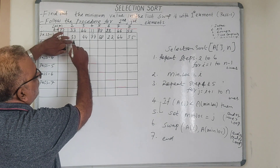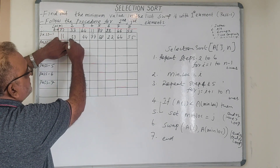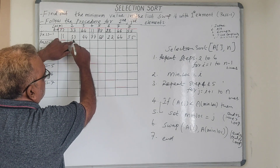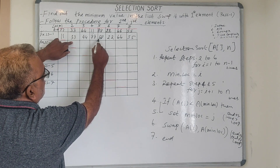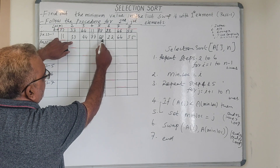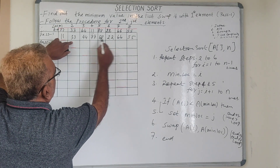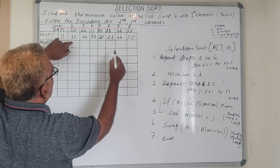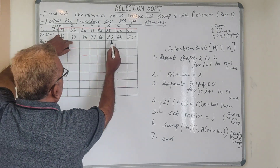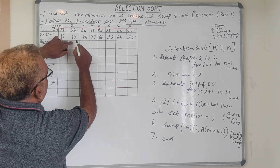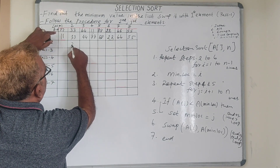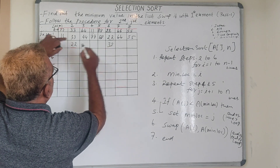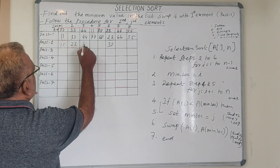Now we start searching for the minimum value from the second element: 33, 44, 77, 88, 22 — 22 is the minimum. So 22 swaps with the second element: 22 comes here and 33 goes there. The remaining values are as they are.